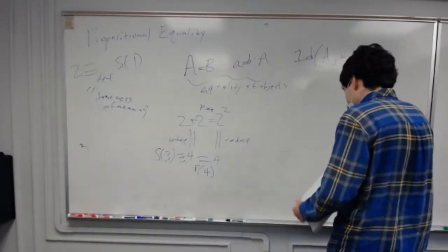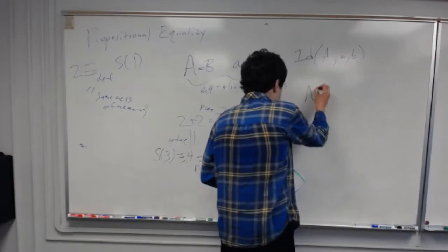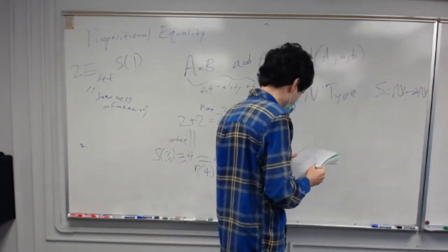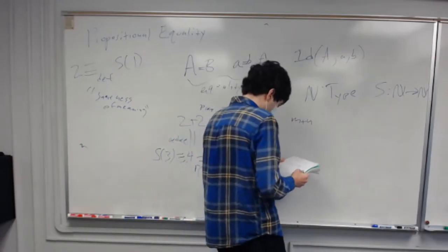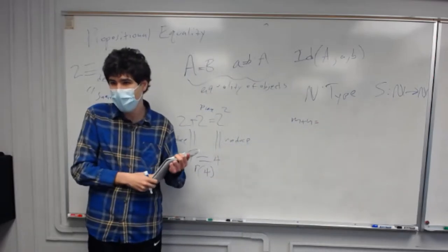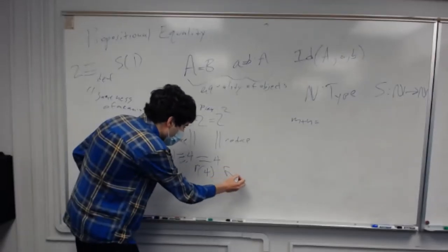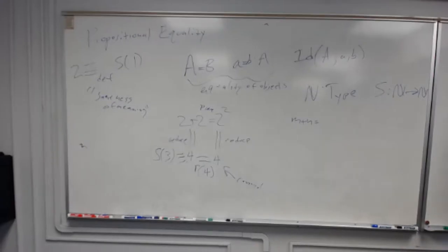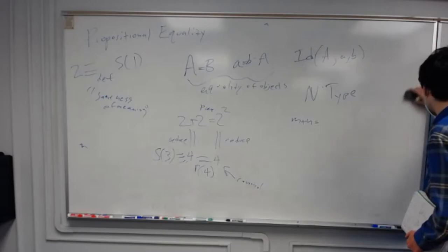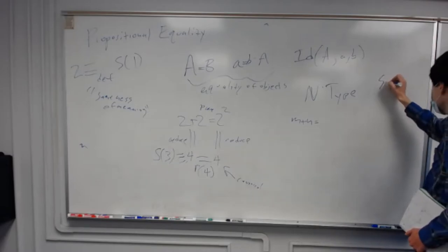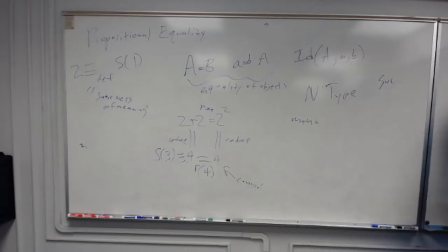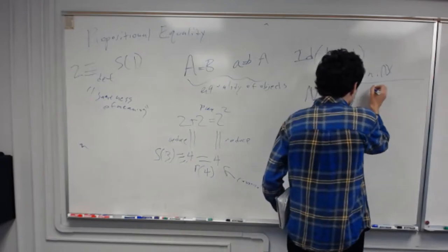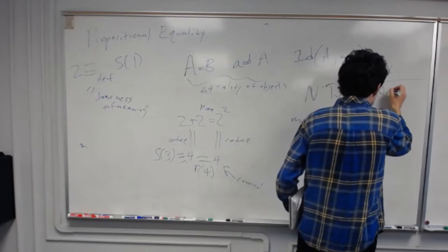To give a more detailed example: we have integers as a type, a successor introduction rule where n colon N gives S of n, and we can make a function 'succ' applying that from N to N. Now we can define addition: n plus 0 equals 0, and n plus (successor k) equals successor of (n plus k).